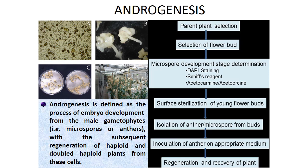This is a flow diagram of how androgenesis occurs. First the parental plants are selected, then select a flower bud. From there, determine microspore development stage either through dye staining, CFC reagent, or aceto-carmine or aceto-orcein solution treatment. Then surface sterilize the young flower buds, isolate the anther or microspore from buds, inoculate the anther on an appropriate medium, and finally regenerate and check the recovery of plants.